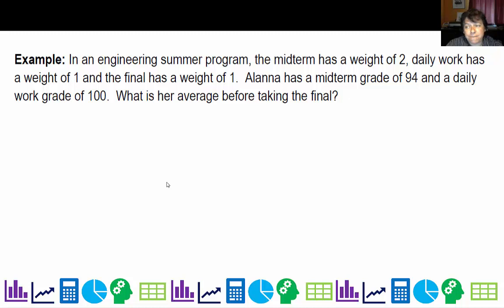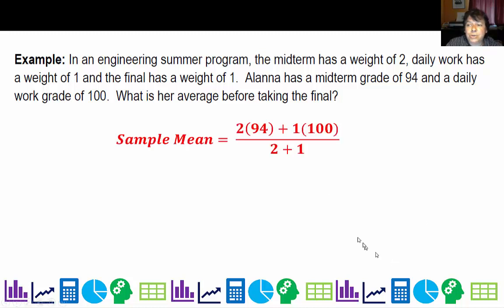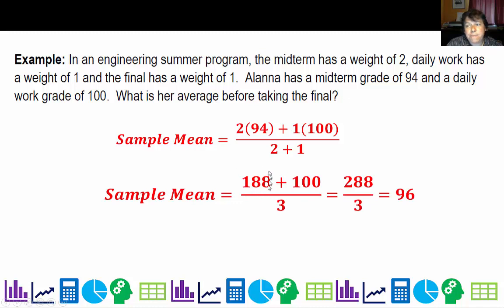Alana has a midterm grade of 94 and a daily work grade of 100. She hasn't taken the final yet, so what is her average before taking the final? It's going to be 2 times 94 and 1 times 100. I'm not counting the final yet because it would obviously bring her grade down, and it's unfair to include it at the moment. So for her progress report, she's going to have 188 points from the test and 100 from the daily work. Add those together, and she will have an average of 96.